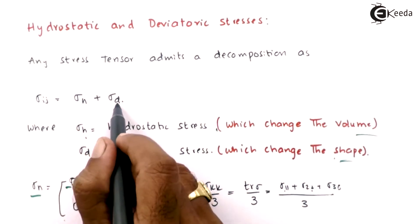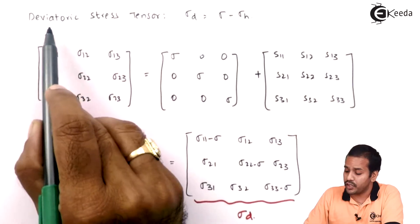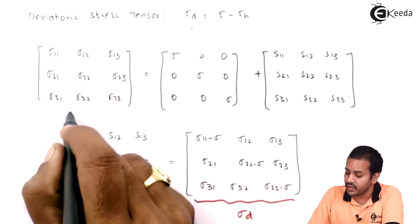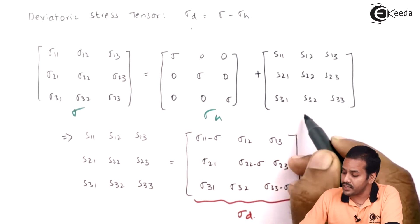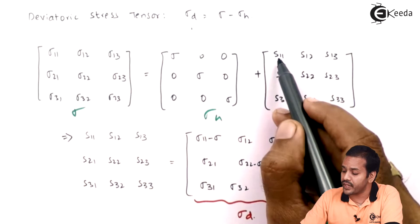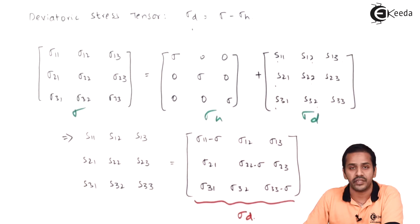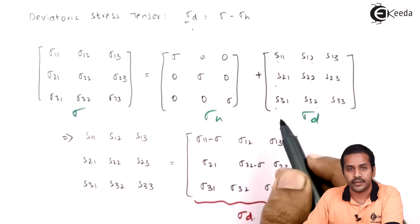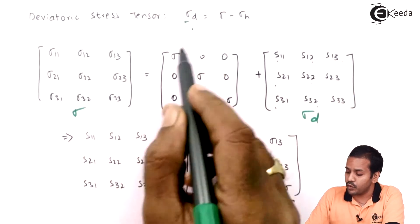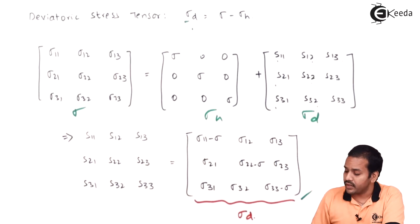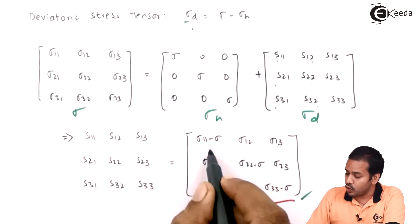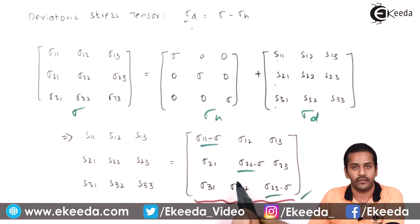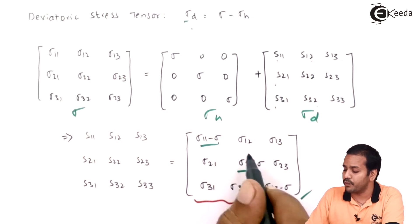The deviatoric stress sigma_d is nothing but sigma_ij minus sigma_h. So the deviatoric stress tensor sigma_d equals sigma minus sigma_h. The components of sigma_d are represented as s_11, s_12, s_13, s_21, s_22, s_23, s_31, s_32, s_33 — this notation differentiates them from the Cauchy stress. Moving sigma_h to the left-hand side, the diagonal components are subtracted by the hydrostatic component sigma, while off-diagonal components remain the same.